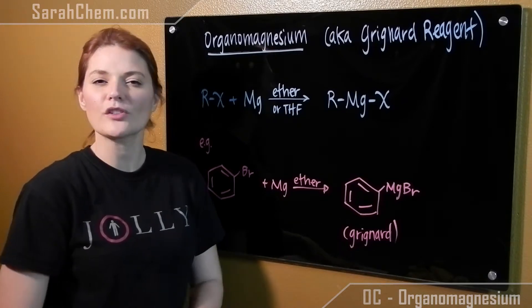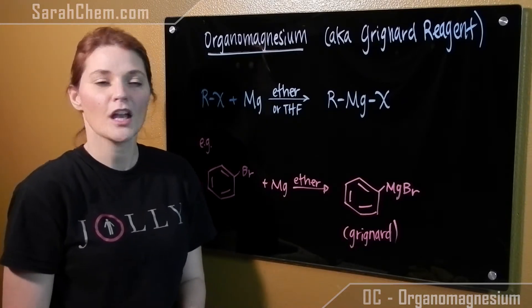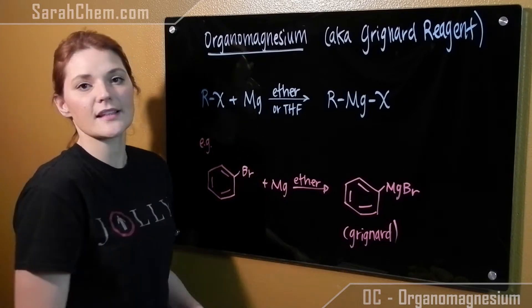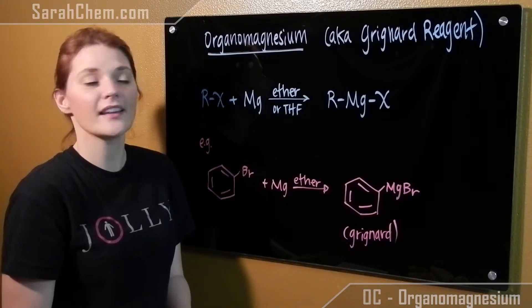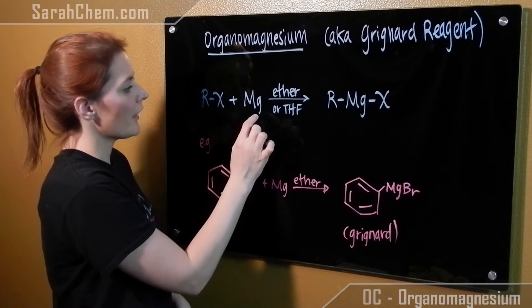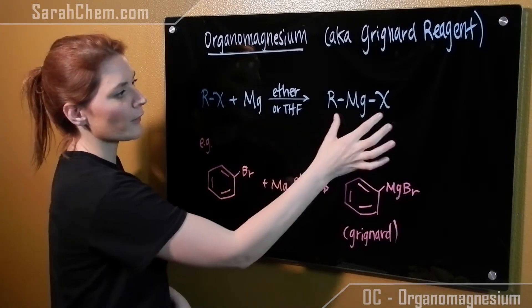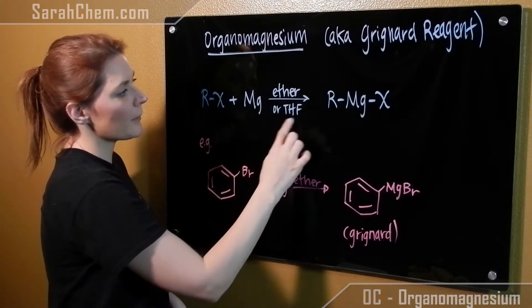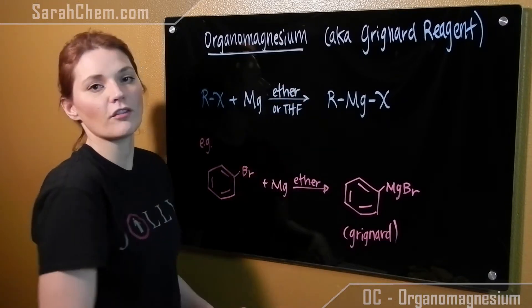In this video though, we just want to look at the preparation of them. So what we do is we take our alpha halide, where the halide is either chloride, bromide, or iodide, and we're reacting with one equivalent of magnesium. The magnesium comes and settles itself right in between the R and the X group. We're also going to be using an ether or THF solvent.